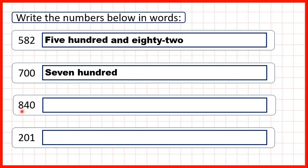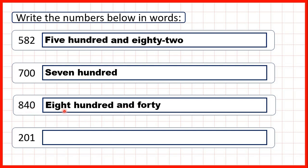Here we have an eight as our hundreds digit, so that's eight hundred. And then, after our hundreds digit, we have a four and a zero, so that's forty. Meaning that our number is eight hundred and forty.